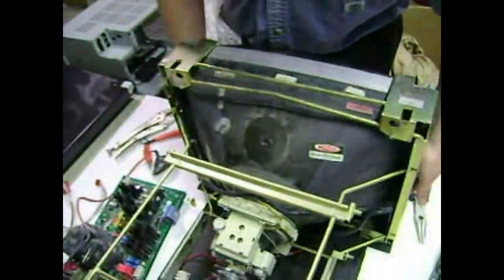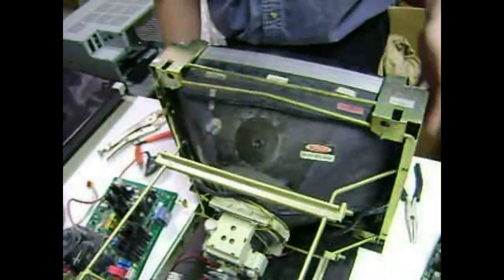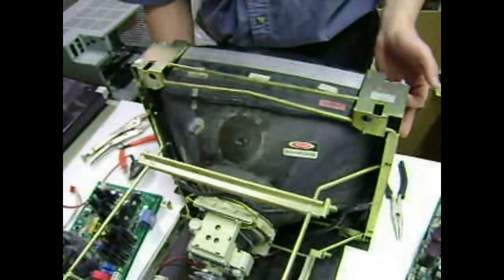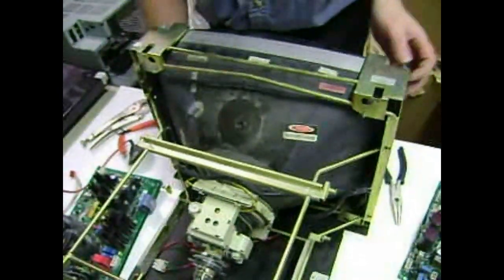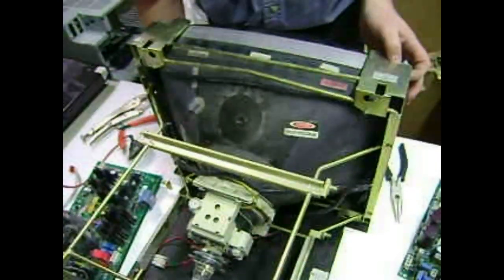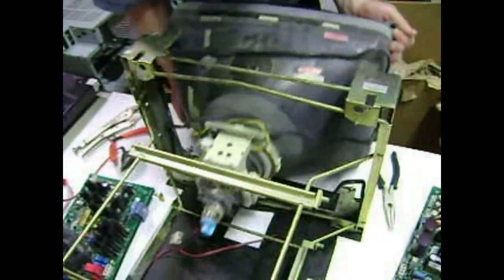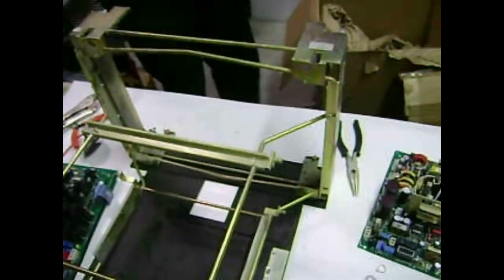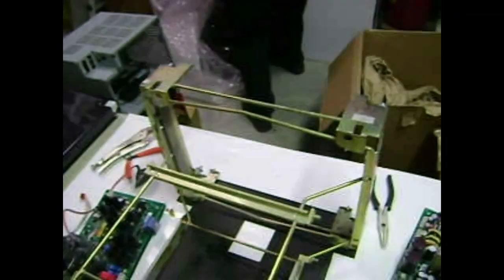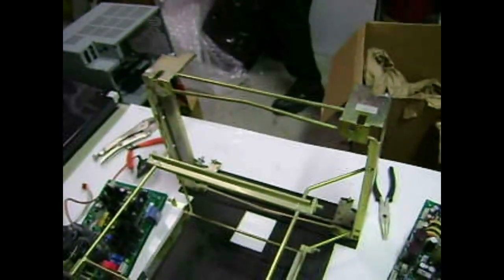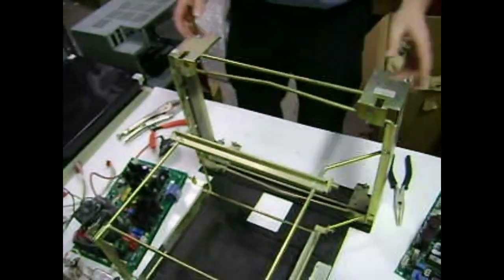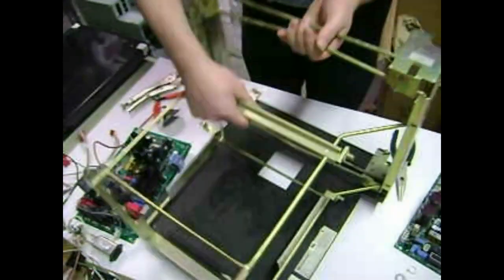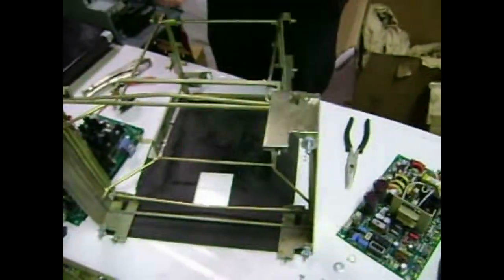Now the big CRT—be careful when you're taking it off because it's a little bit heavy, and if you drop it, it'll implode because there's a vacuum inside. Take that to your local recycler, and this is what you should be left with: a nice light frame.